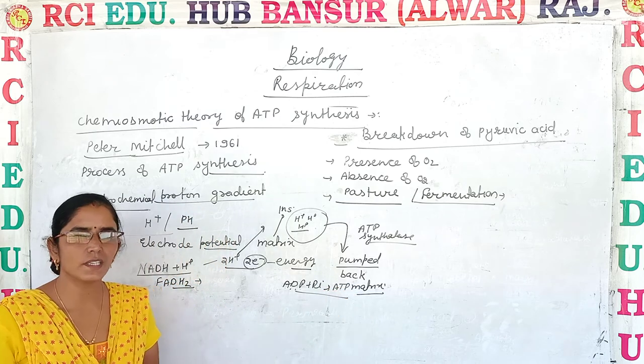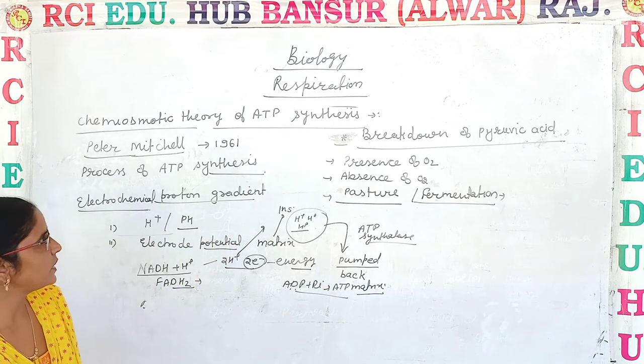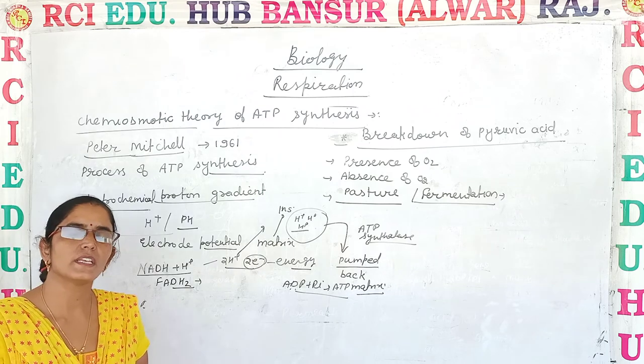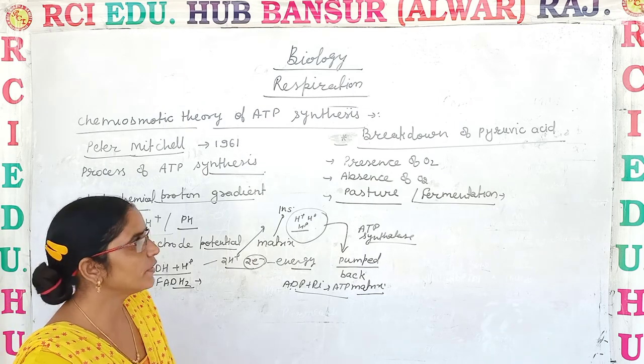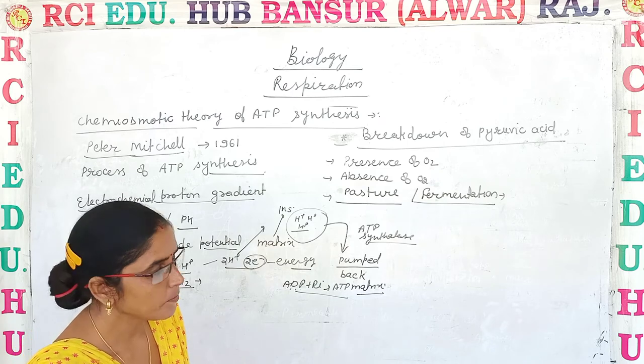Overall, this theory was explained by Peter Mitchell and the theory is known as the chemo-osmotic theory of ATP synthesis.